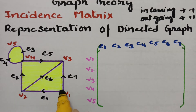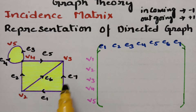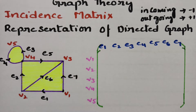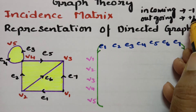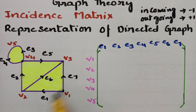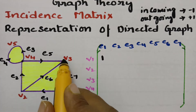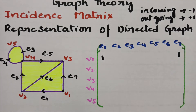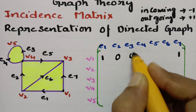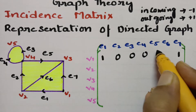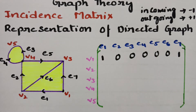Coming to v1, it has two edges — both are outgoing. So for outgoing edges we give plus 1: e1 gets plus 1 and e7 gets plus 1. There are no other edges, so I am keeping zeros for the rest.